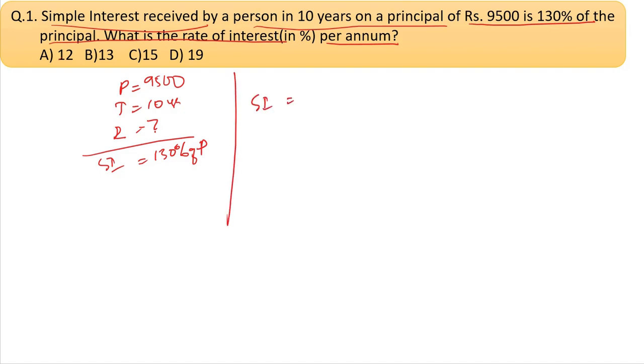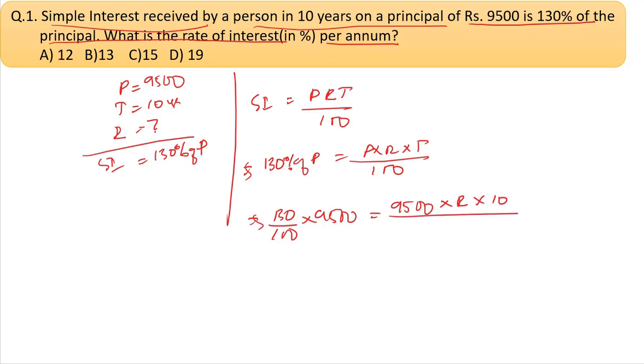Simple interest equals principal times rate times time divided by 100. If simple interest is 130% of principal, then P × R × T / 100 = 130/100 × P. Principal is 9500, time is 10 years. Solving: 9500 × R × 10 / 100 = 130/100 × 9500. Therefore R = 13. The answer is option C, 13%.